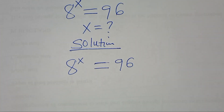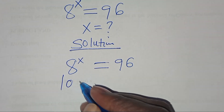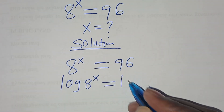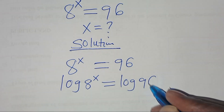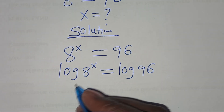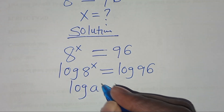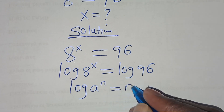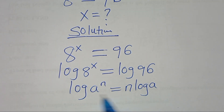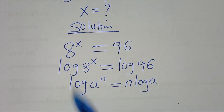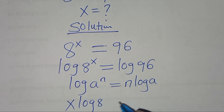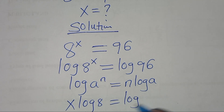To solve for the value of x, we introduce logarithm on both sides: log(8^x) equals log(96). Now log(8^x) is in the form log(a^n), which can be expressed as n·log(a). Applying this power property of logarithm, log(8^x) becomes x·log(8) equals log(96).